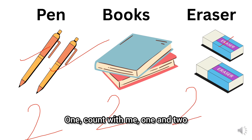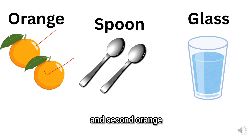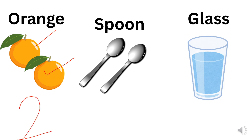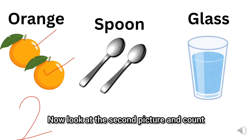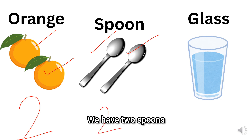Count with me: one and two. Now look at the picture. We have one orange and a second orange. We have two oranges. Now look at the second picture and count: one, two. We have two spoons.